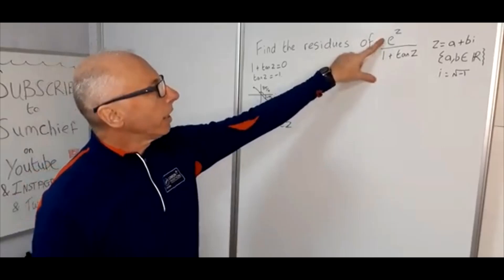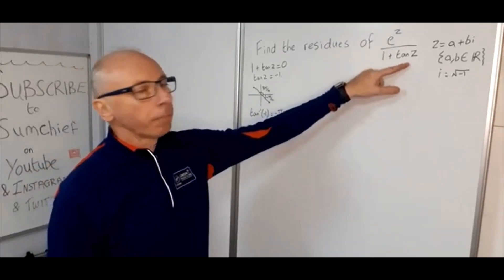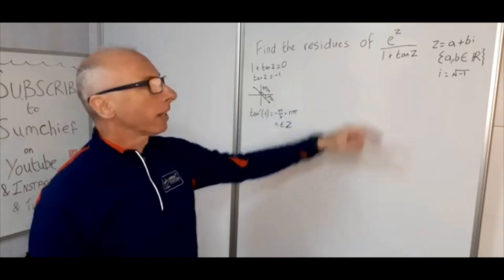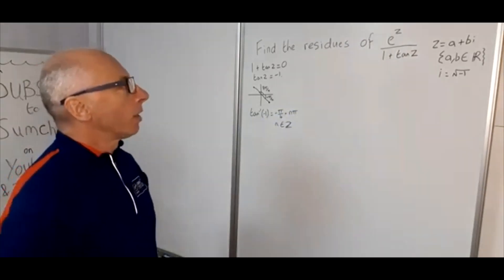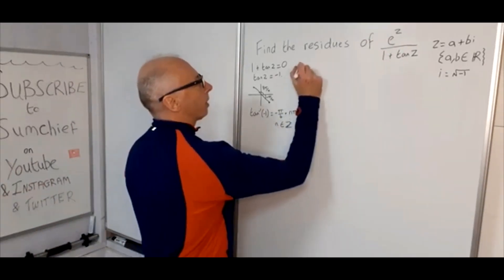Now we can see that here, e^z and 1 plus tan(z)—this is completely complex differentiable everywhere and it's analytic everywhere. So what we can do is we can split this function here.